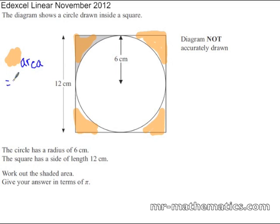So the shaded area is going to be the square which is 12 times 12, 144 cm squared.